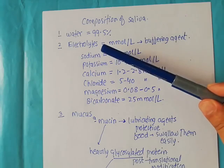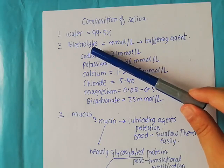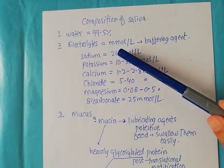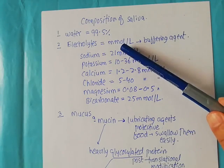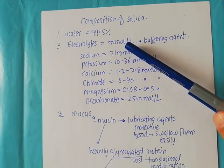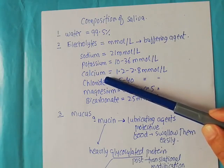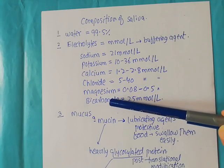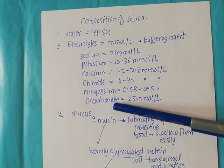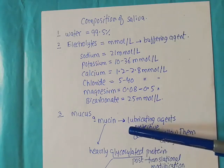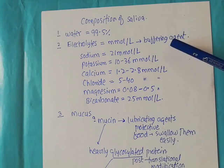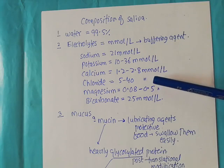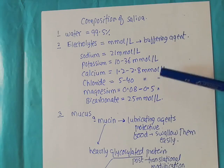One of the important components of the saliva is the electrolytes, which are present in the concentration of millimoles per liter. Different electrolytes like sodium, potassium, calcium, chloride, magnesium, and carbonate are present in the saliva. The major function of these electrolytes is to work as buffering agents so that the enzymes we will discuss in this video can have an optimum environment for their function.